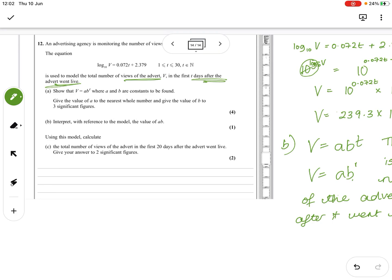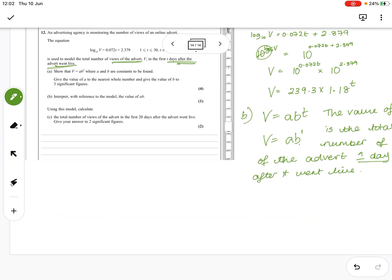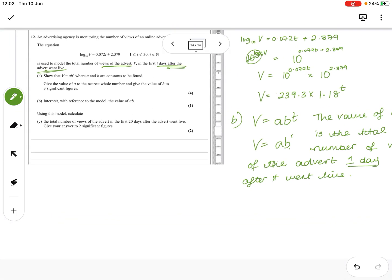Okay, using the model, calculate the total number of views of the advert in the first 20 days after the advert went live. So V equals 20 - no, T, 20 days after it went live. Yeah, so T equals 20, we want the total number of views.